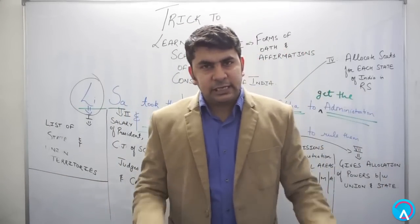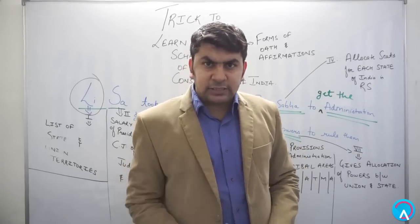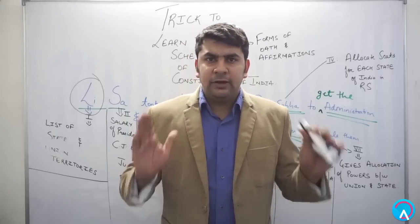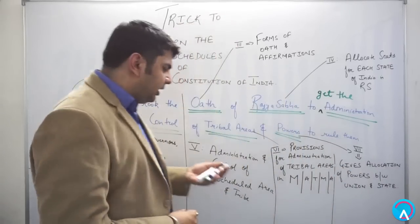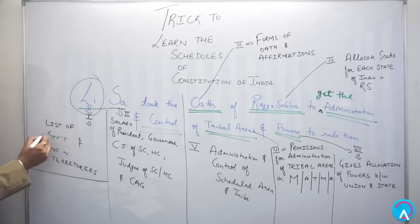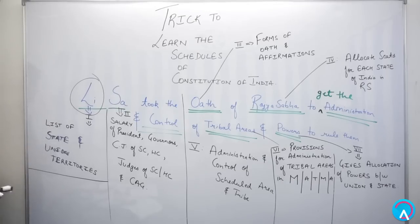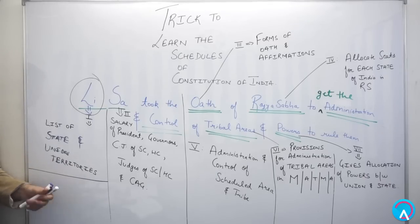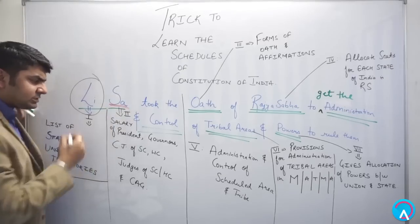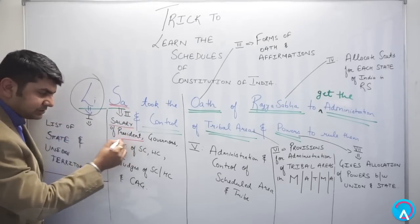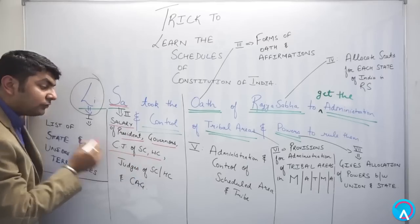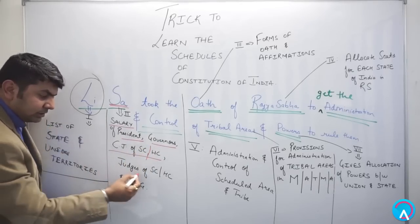Let's discuss the first seven schedules. The first schedule — 'Li' stands for List of States and Union Territories. The second schedule — 'Sa' stands for Salary: salary of the President, Governors, Chief Justice of the Supreme Court, High Court judges, and CAG (Comptroller and Auditor General of India).